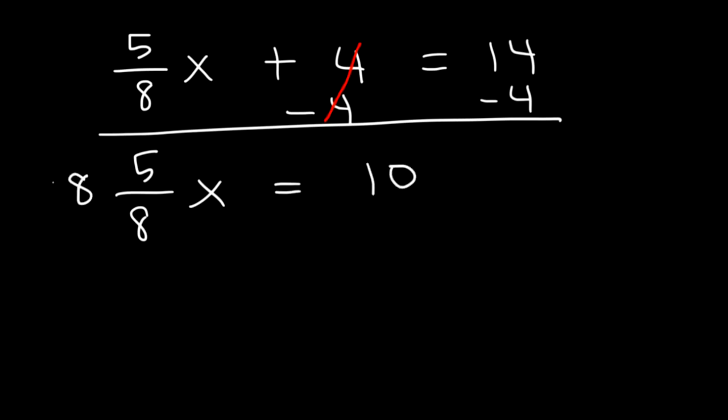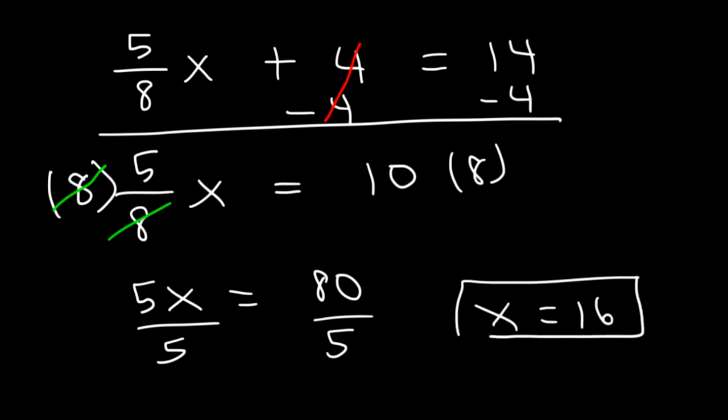Now, let's multiply both sides by 8. So we're going to have 5x is equal to 10 times 8. 10 times 8 is 80. And now, let's divide both sides by 5. 80 divided by 5 is 16. And so that's the value of x.